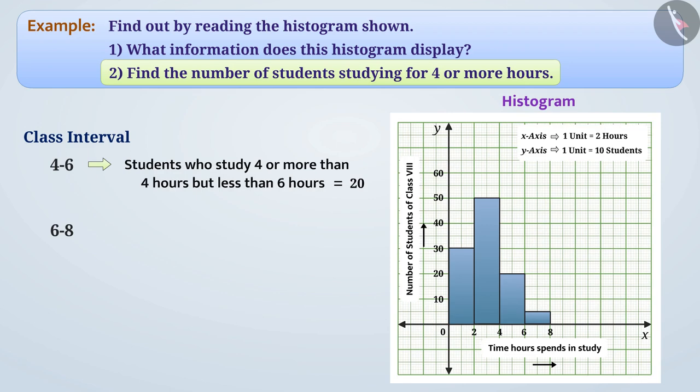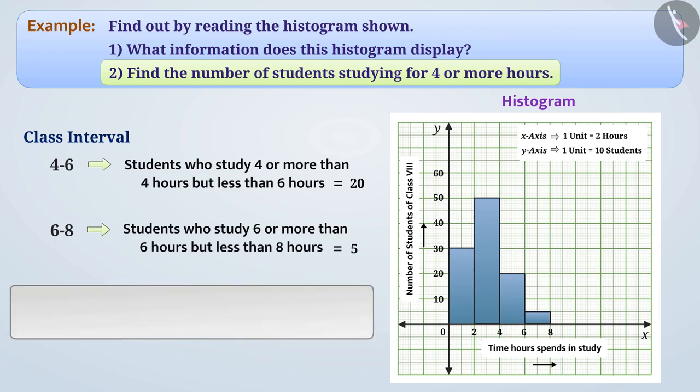Similarly, the class interval 6 to 8 and its length of bar shows that, there are 5 students who study 6 or more hours but less than 8 hours. In this way, the number of students studying for 4 or more hours is 25.